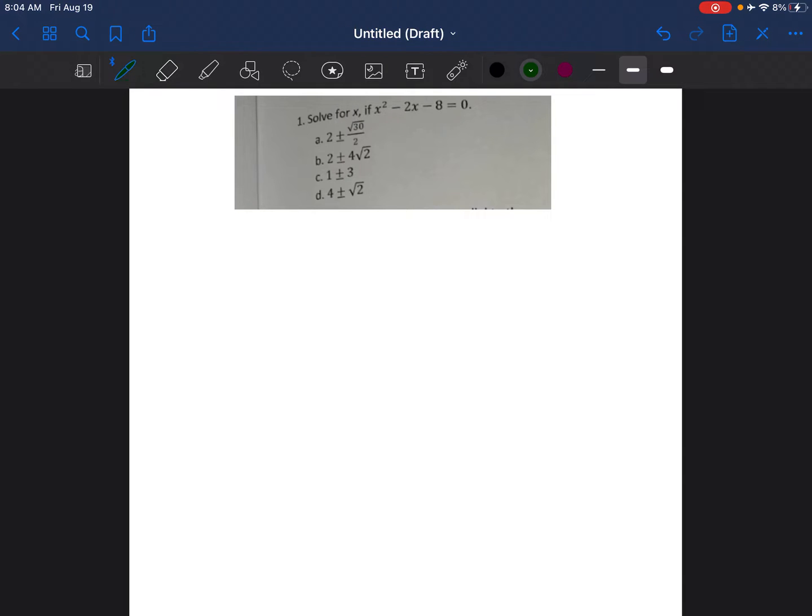So for problem number one, it says solve for x if x squared minus 2x minus 8 is equal to 0. And then they give me four answer choices. When I'm looking at this problem, I see that there's an x squared in the equation. Then I also see that some of the answers have a square root in them. And so I know from those two indications that I'm working with quadratic equations and I'm going to have to use a quadratic formula.